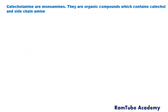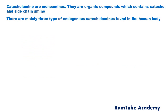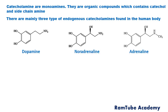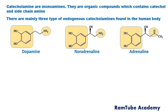Catecholamines are monoamines and they are organic compounds which contain a catechol and a side chain amine. There are mainly three types of endogenous catecholamines found in the human body: dopamine, noradrenaline, and adrenaline. In all their structures you can find the catechol moiety and the presence of an amine functionality in the side chain, and hence these chemicals are called catecholamines. As they contain only one amine functionality, they are referred to as monoamines.